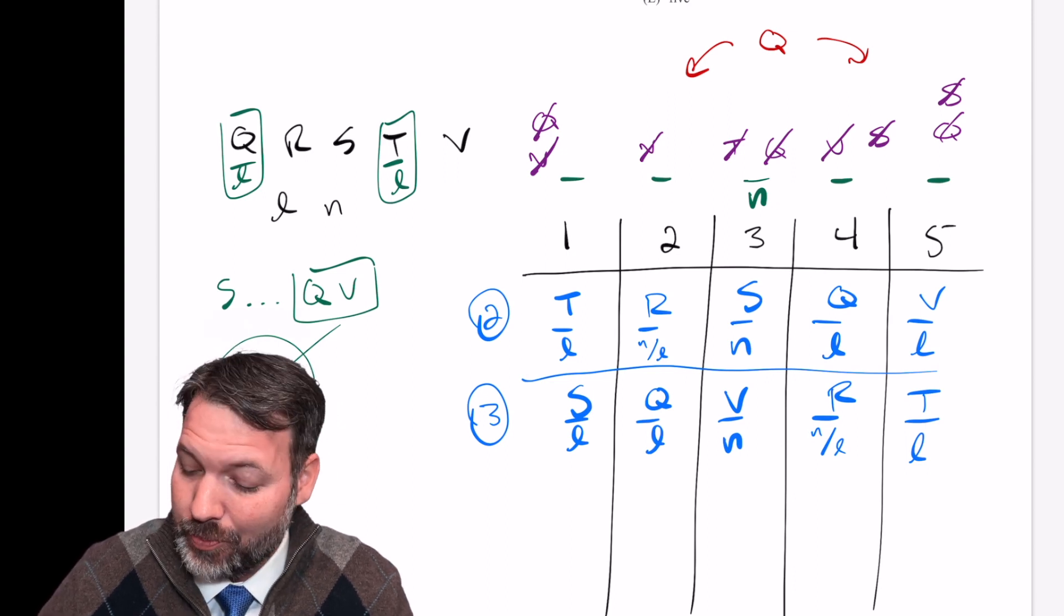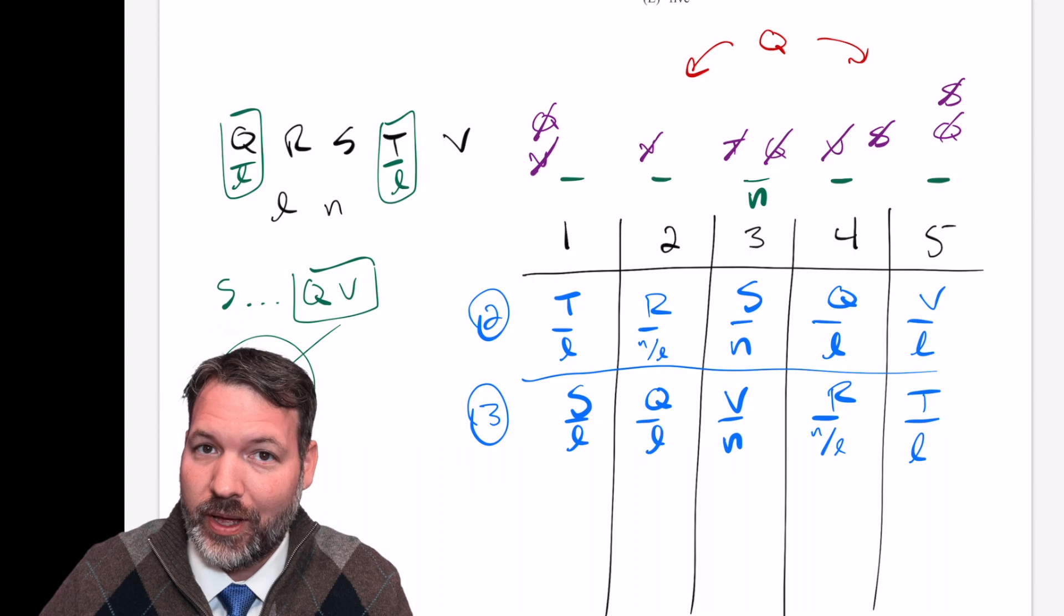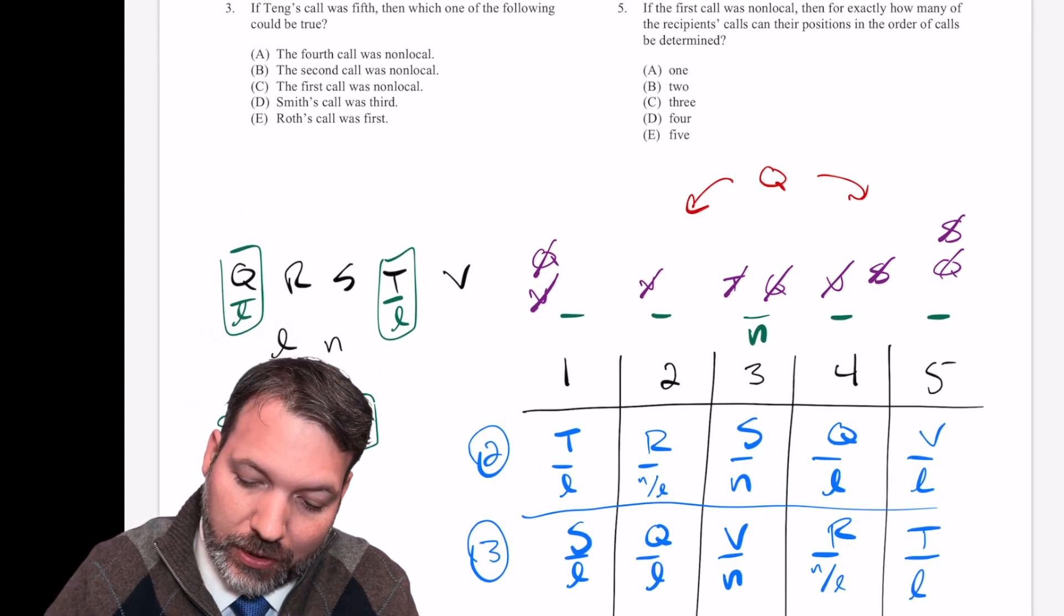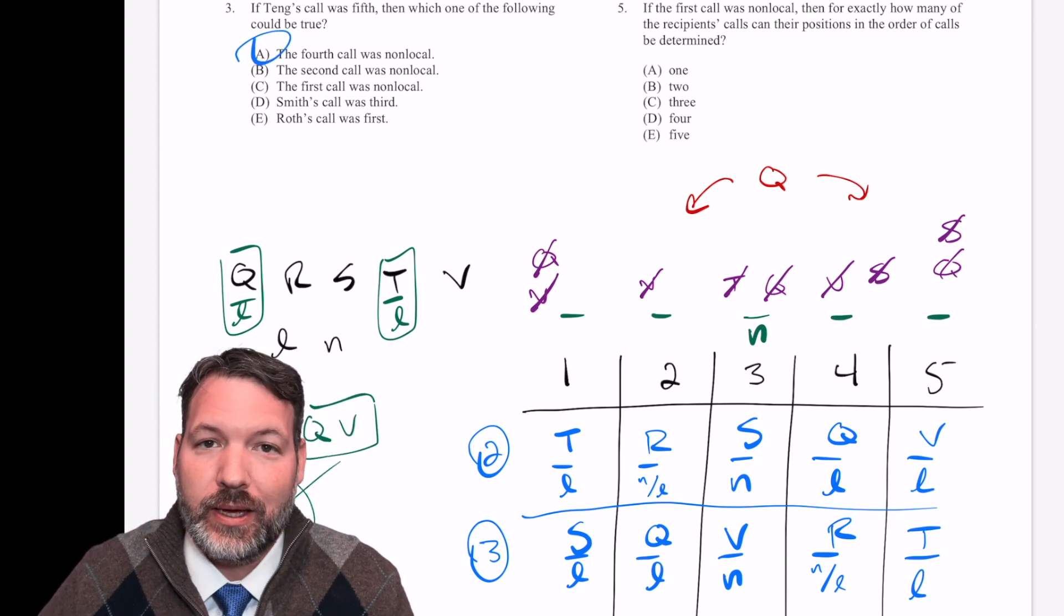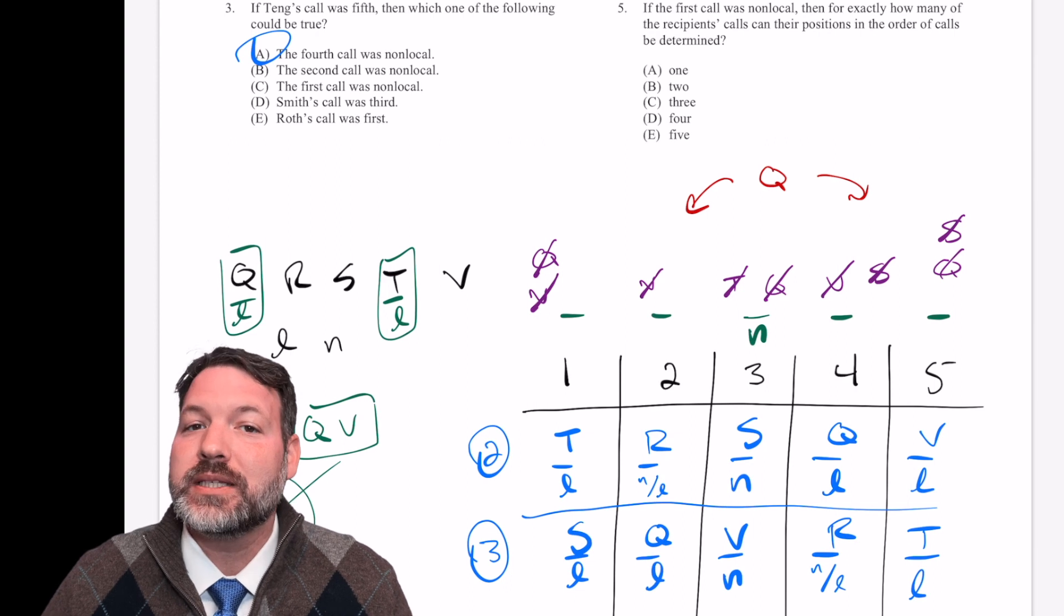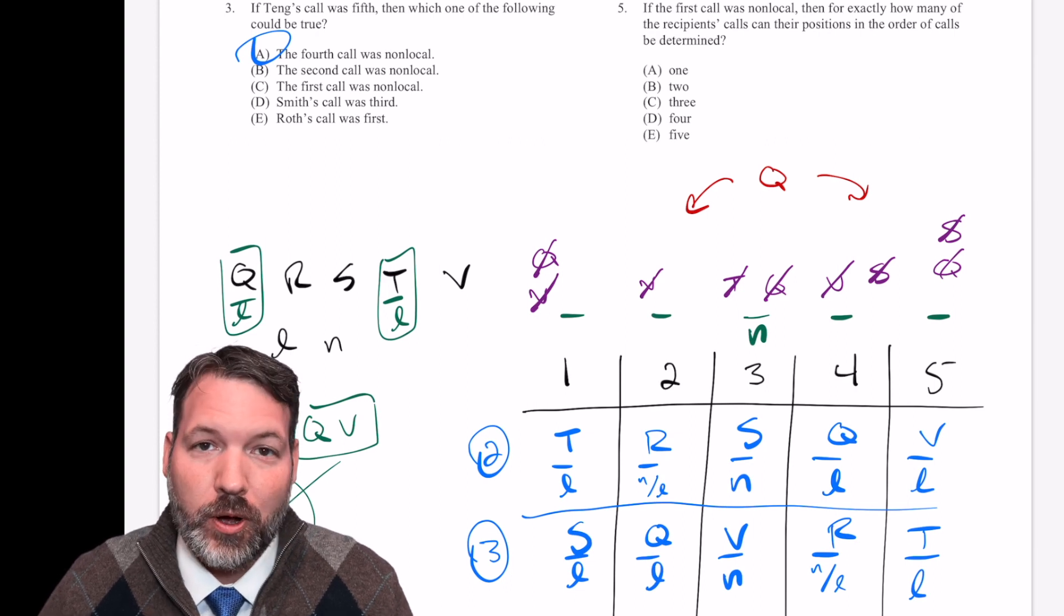So I'm guessing it could be true that they're going to have to say something about the fourth call or wherever Roth is. A could be true. Fourth call is non-local. Circle answer choice A. And again, don't check BCDE. We've done the process correctly. There must be something wrong with the other four.